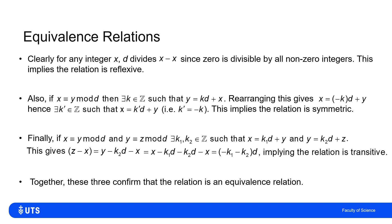So because this congruence, this modulo arithmetic is reflexive, is symmetric and is transitive, then I can say being congruent under modulo arithmetic defines an equivalence relation.